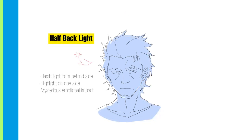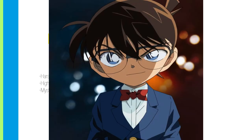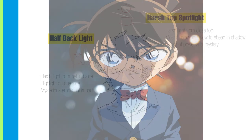A variation on the backlighting is the half backlighting. The light source is coming from only one side in this case. By keeping most of the character hidden, we create a more mysterious feeling instead of unease like with the previous type of lighting. If you look at Conan the Detective, they make use of this lighting very often.